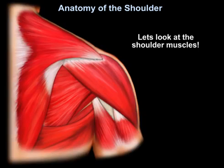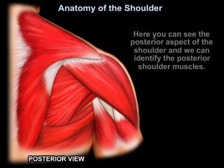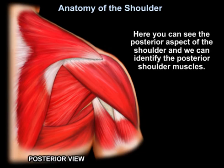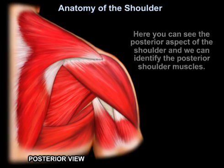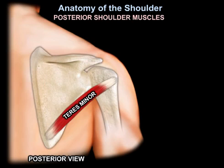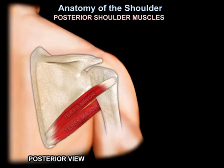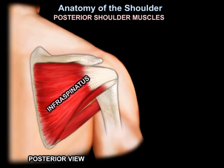Let's look at the shoulder muscles. Here you can see the posterior aspect of the shoulder, and we can identify the posterior shoulder muscles: the teres minor, the teres major, and the infraspinatus.